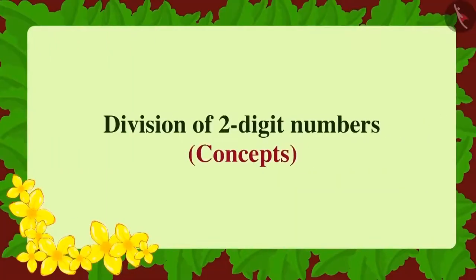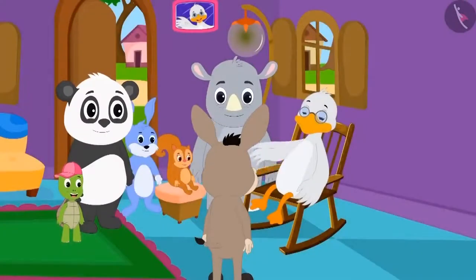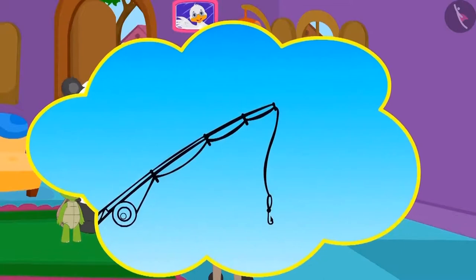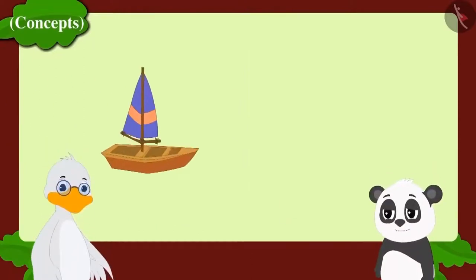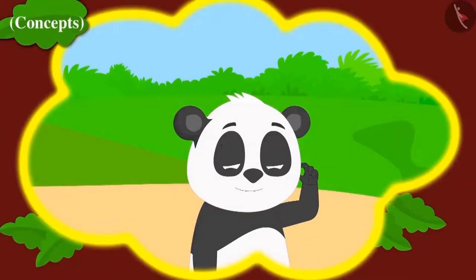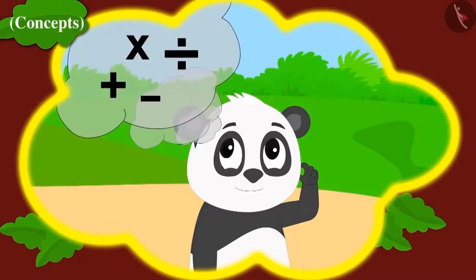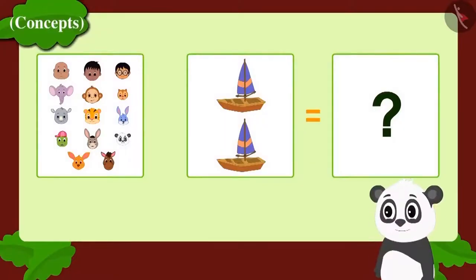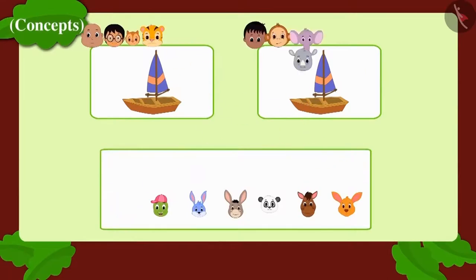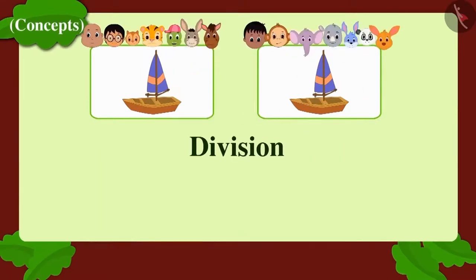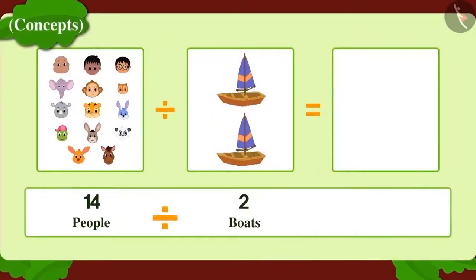Now let us see a few concepts on division. One day, Badbole Chacha and some people were going fishing. They were 14 people in all with 2 boats. Chacha asked Golu how many people could go in each boat. Golu will have to use the method of division. Whenever we need to divide objects equally or make equal groups, we use division. Using division, Golu found that 7 people could go in each boat.